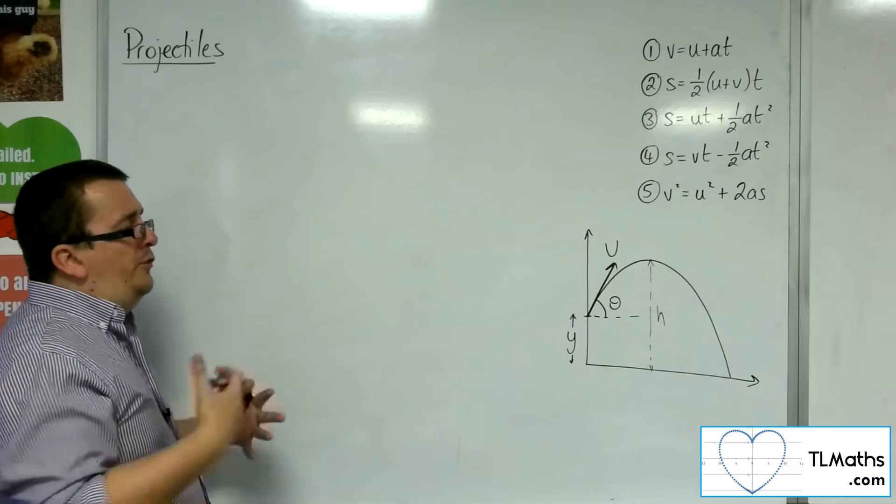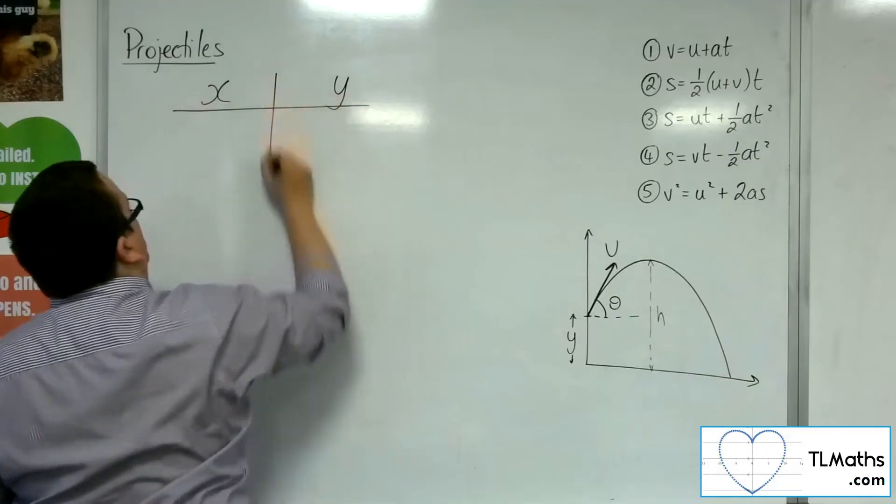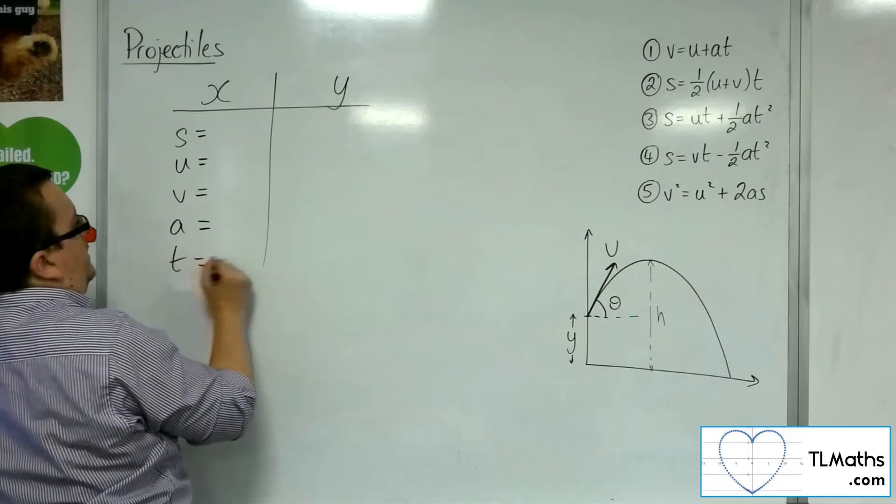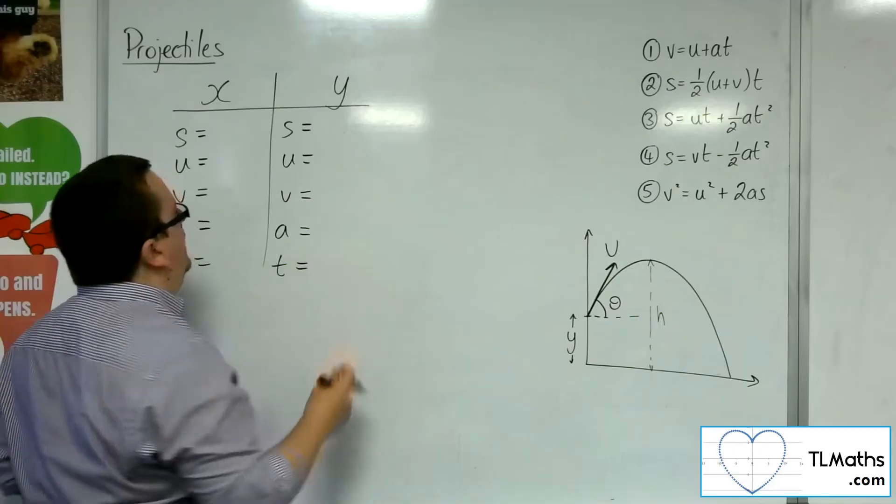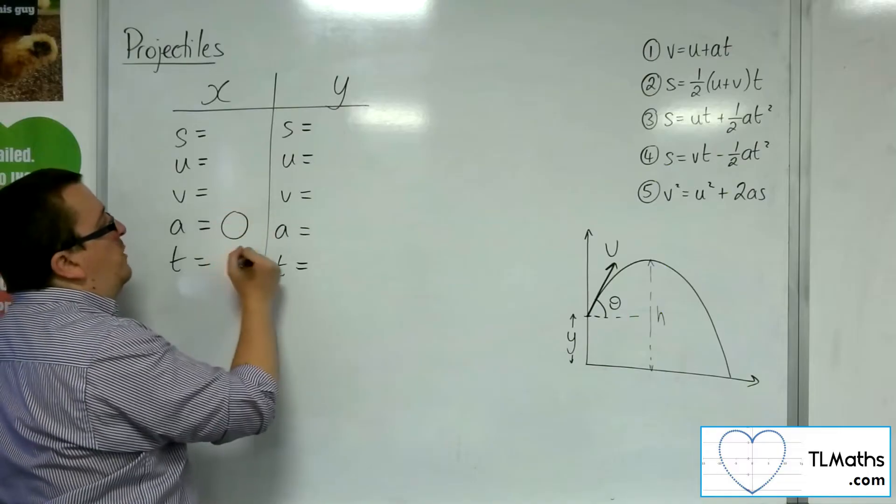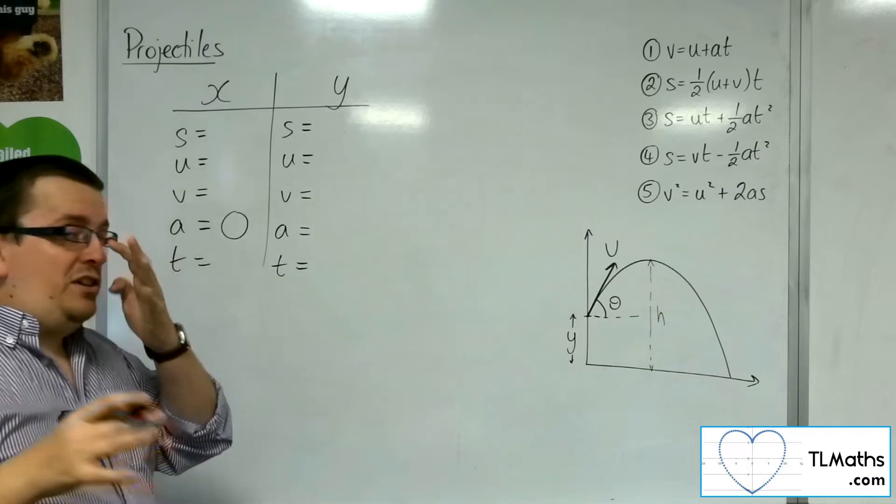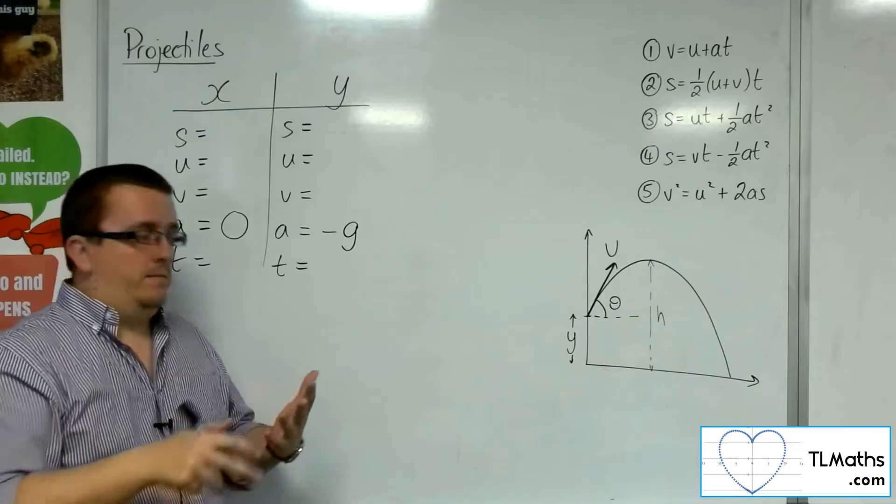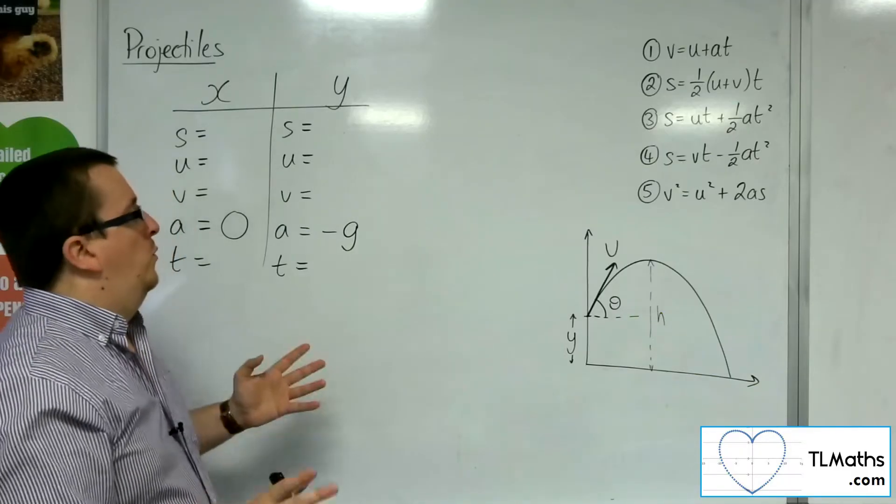So I'm going to do this from a SUVAT method. So let's have a look at the x and y components. S, U, V, A, T for both x and y. So what do we know? Well, we know that the acceleration in the x direction is 0, and for y, in the vertical component, it'll be minus 9.8. We're going to do this more generally, so we've actually got it as minus g, so that we can easily substitute in if we're using 10, 9.8, 9.81, etc., or more accurate versions.